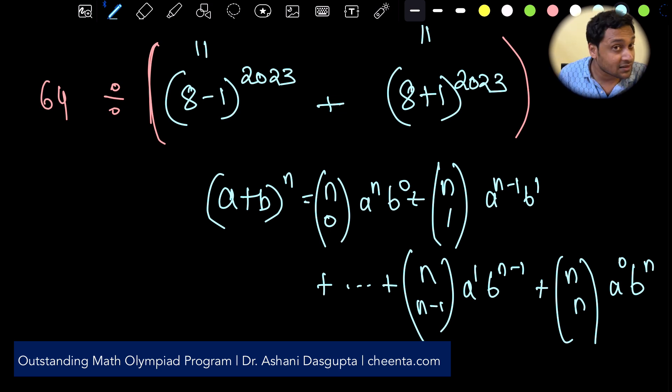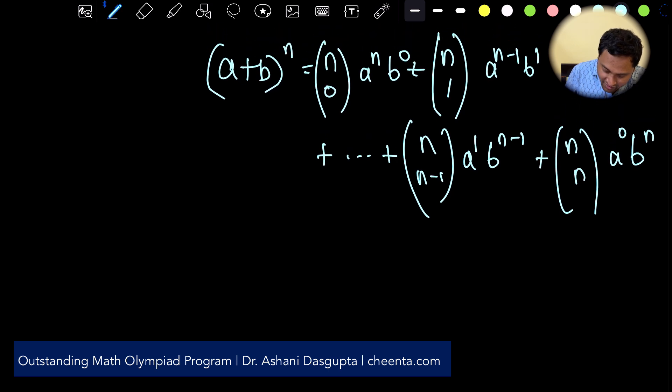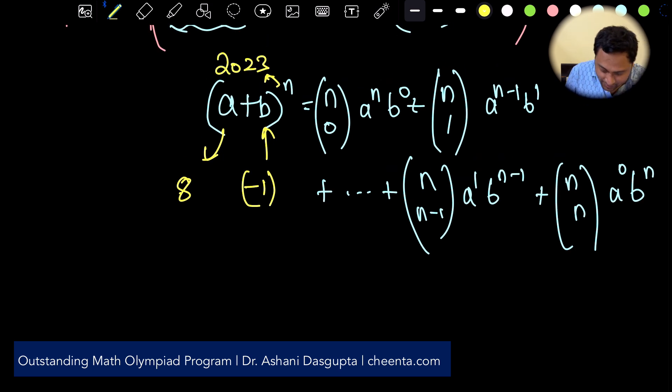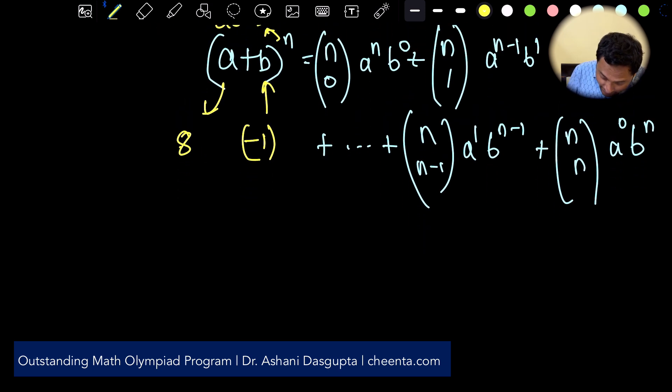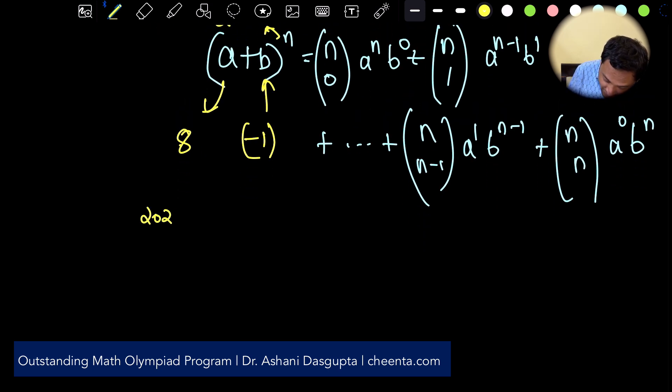So let's binomially expand 8 minus 1 raised to the power 2023 so here a is 8 and b is minus 1 and n is 2023.